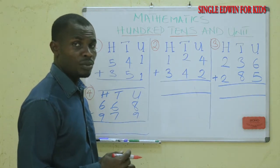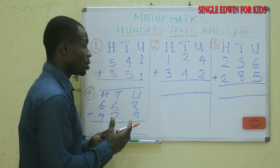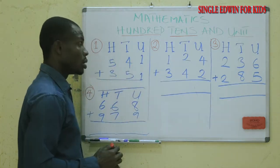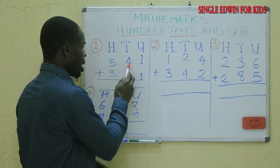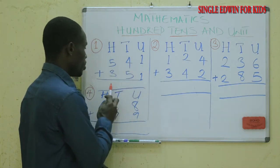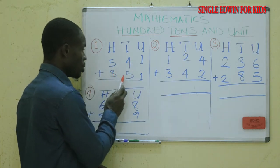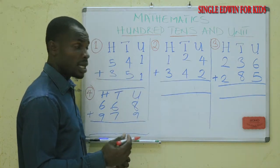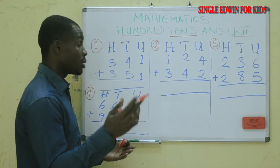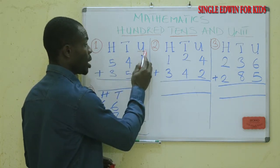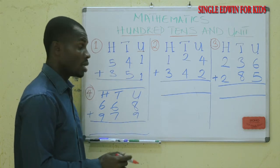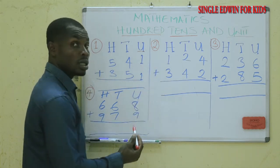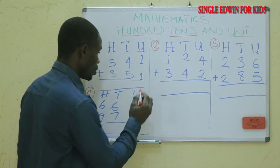We are going to calculate. Number one: five hundred and forty-one plus three hundred and fifty-one. I told you that we are going to start from the units. That is the unit — one. We calculate: one plus one is two.